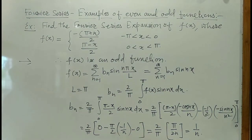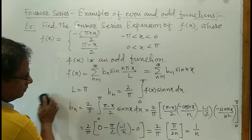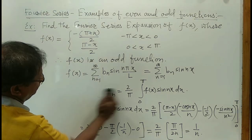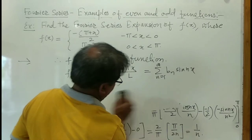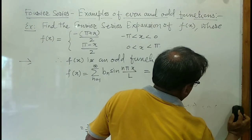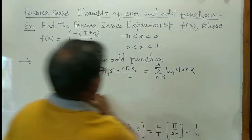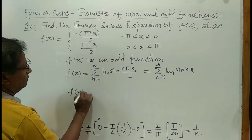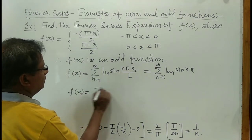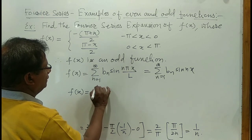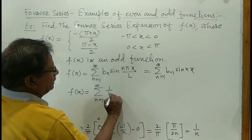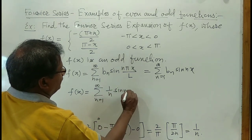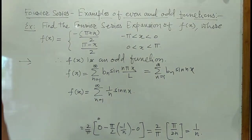Therefore the required Fourier series is f(x) equals summation from n equals 1 to infinity of (1/n) sin(nx). This is the required Fourier series for the given odd function.